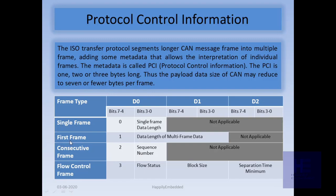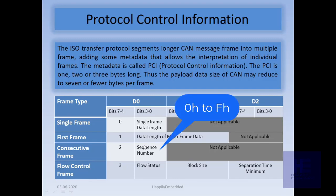For the First Frame, bits 0 to 3 of data byte 0 together with data byte 1 represent the total data length of the multi-frame data. For the Consecutive Frame, bits 3 to 0 of data byte 0 represent a sequence number, which goes from 0 to F.